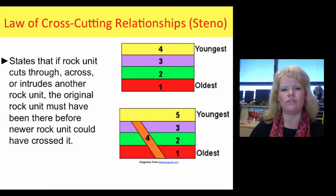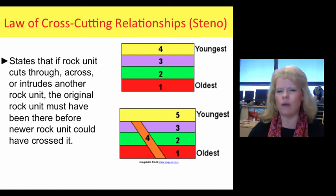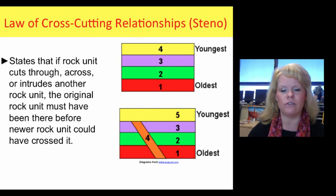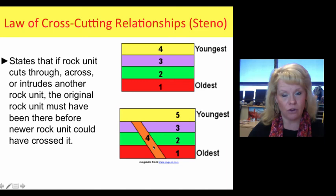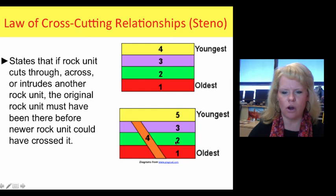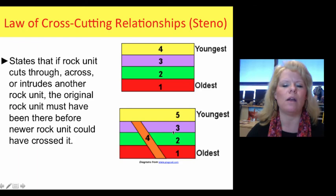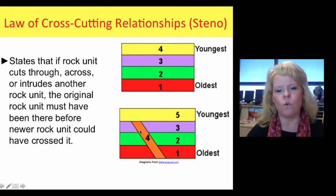Igneous rocks are molten until they harden. In this diagram, layers one, two, three, and four are sedimentary layers laid down flat. Layer four is actually a different rock type — an igneous dike. Igneous dikes are molten magma or lava that cut across layers one, two, and three, making the dike younger than those layers. Layer five is younger than four because four did not cross over it. Had four crossed over five, it would be the youngest feature on the diagram.